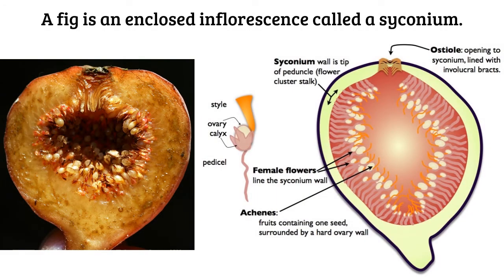A fig is an enclosed inflorescence called a syconium. We talked about this on our field trip where we walked around in the forest behind CR. Here we're looking at a fig and a syconium — this enclosed inflorescence made up of many florets, and all of those florets develop within this structure.